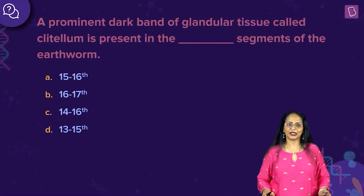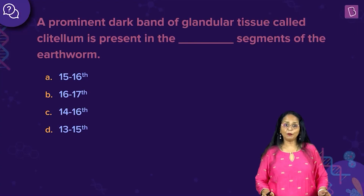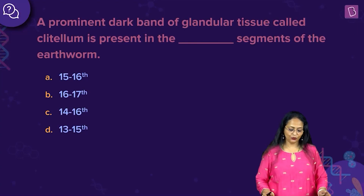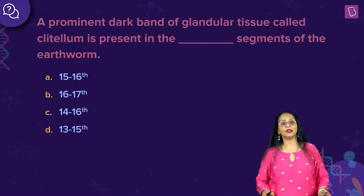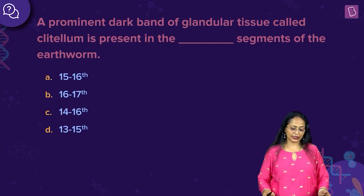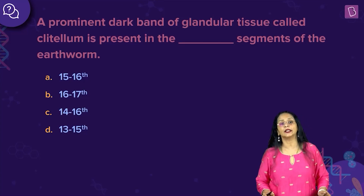Let us now do a fill-in-the-blanks question. A prominent dark band of glandular tissue called clitellum is present in the blank segments of the earthworm. Is it the 15th to the 16th, 16th to the 17th, 14th to the 16th, or is it between the 13th and the 15th segment?